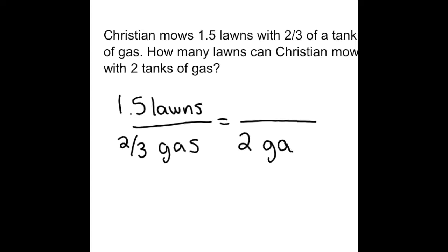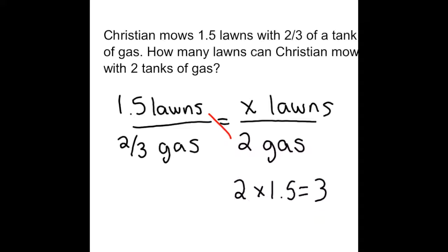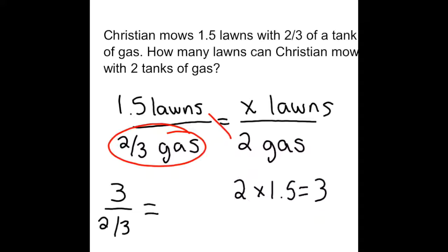I fill in my two tanks of gas, and I don't know how many lawns yet, so that's x. Notice how I'm writing the full unit in my proportion — I do this to make sure it's organized and correct, and I highly recommend you do the same. Next step: cross multiply and divide. First, 1.5 times 2 is equal to 3. Then I divide by the only thing left, which is the two-thirds tank of gas. So 3 divided by two thirds is equal to 4.5 lawns.